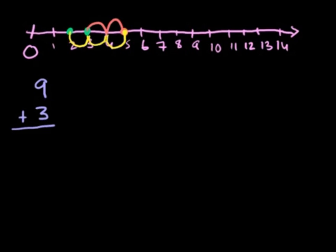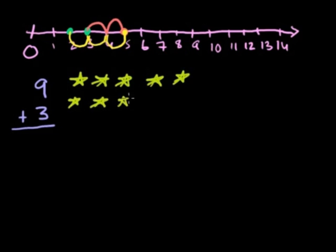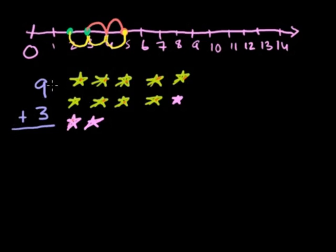Let's say I wanted to add 9 plus 3. We could draw stars: 1, 2, 3, 4, 5, 6, 7, 8, 9 — that's 9 stars. And then I add 3 stars: 1, 2, 3. If you count the total number of stars you'd get 1, 2, 3, 4, 5, 6, 7, 8, 9, 10, 11, 12. So 9 plus 3 is equal to 12.